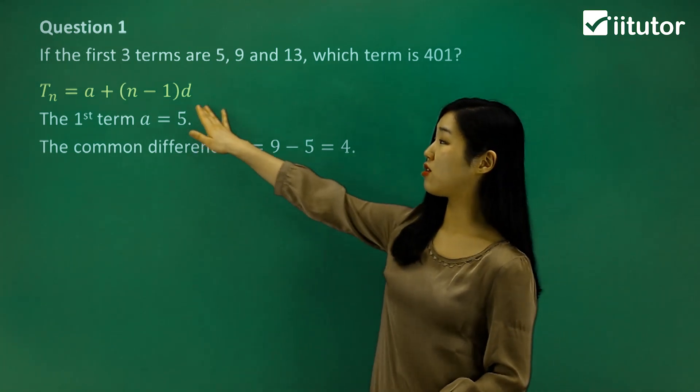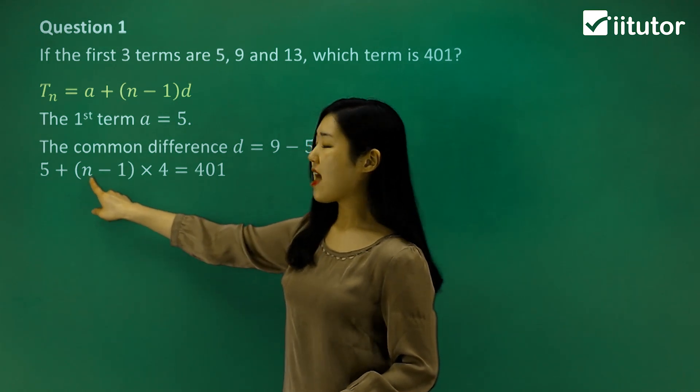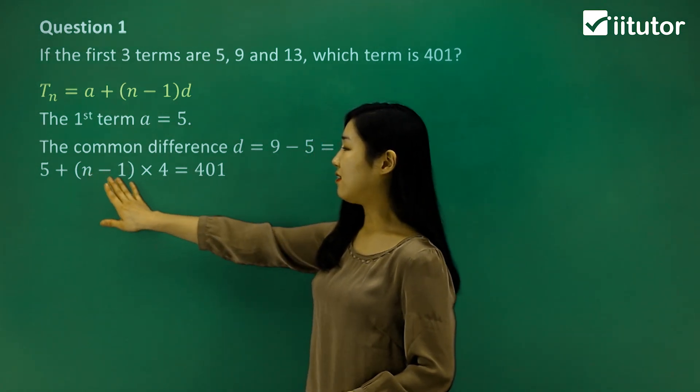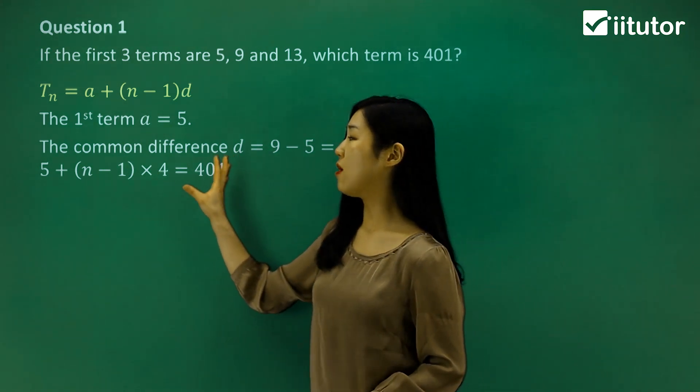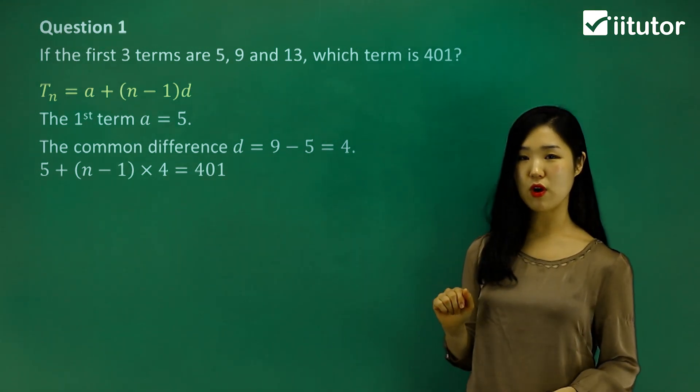Let's put those into our formula. So a is 5, n we don't know and that's what we want to find. So that's n minus 1, leave it as it is, and then the common difference we found is 4. We want to know which term this makes 401, so we want to make that equal to 401 and find n.